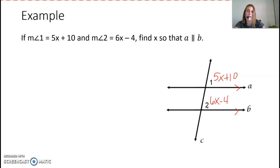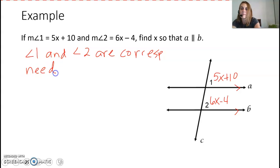So that makes them corresponding. So angle 1 and angle 2 are corresponding angles, so they need to be congruent to have parallel lines. And that is by postulate 4.2.